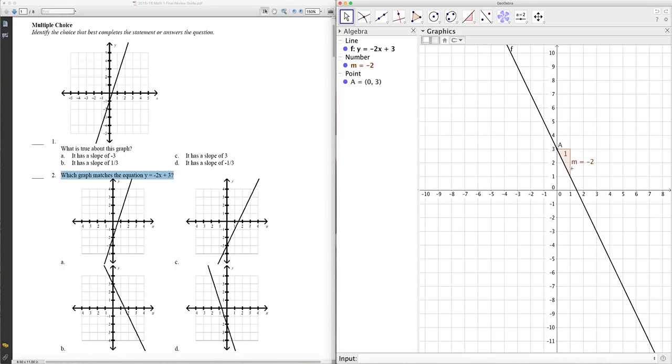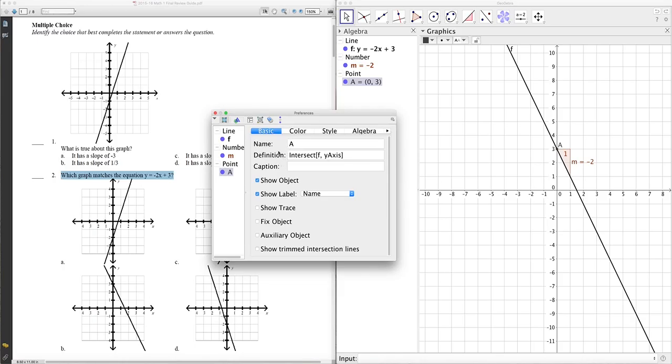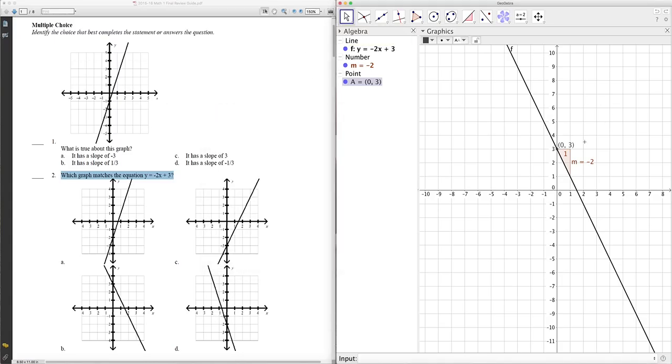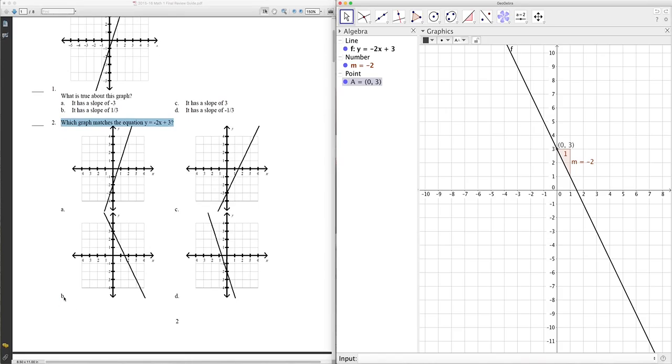So, slope of negative 2, a y-intercept of 3, I could right click on the point A, go to object properties, and see where it says show label. You can actually choose just the value. So there it is. It shows you the value of that point, which is 0, 3, and that is the y-intercept. So which graph is that? Well, looks like letter D, or B, sorry, B.